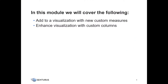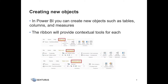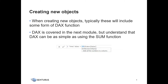In this video, we will look at how to create new measures and enhance our visualization with custom columns. Your data source is never going to have every single field you might need — you'll need to create custom objects to handle all of your business requests. Power BI makes it easy to create new objects like tables, columns, or measures. Contextual tools are available for each of these object types. Creating new objects will require some knowledge of DAX. We will get into DAX more in-depth in the next module, but for now we'll use some basic commands like the sum function.